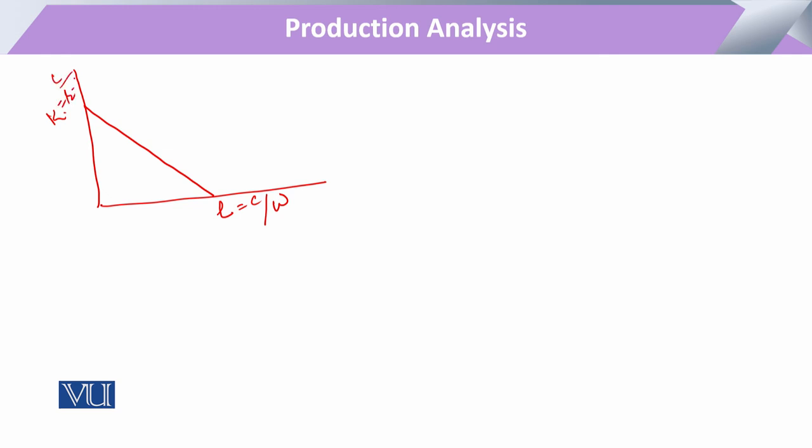Now we assume that the new price of labor, W prime, is more costly, or we can say it is greater than the previous price. And the new part of the labor will be like this where W prime is greater than the previous one.